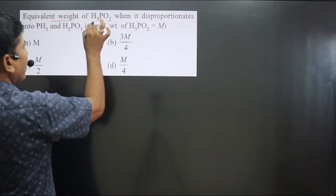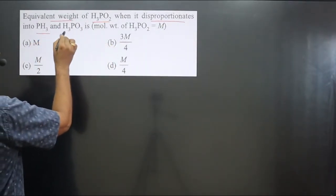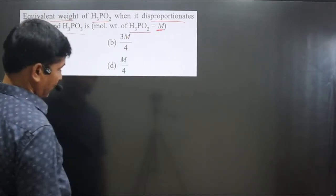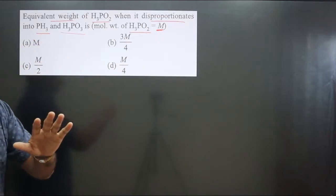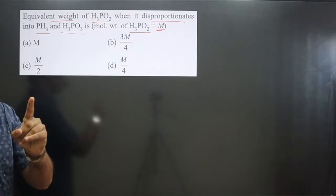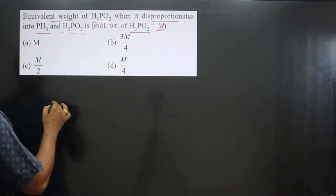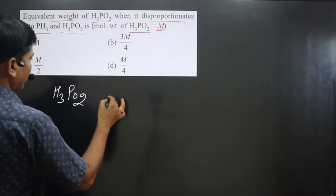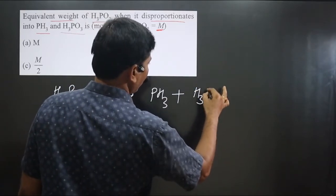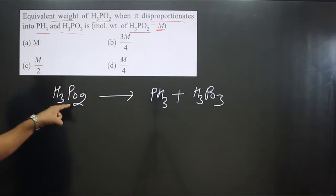The question asks for the equivalent weight of H3PO2 when it disproportionates into PH3 and H3PO3. The molecular weight of H3PO2 is given as M. A disproportionate redox reaction is one in which a single element undergoes both oxidation and reduction. We write down the chemical reaction: H3PO2 disproportionates into PH3 and H3PO3.